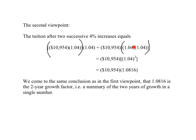We can compute whatever's in here first, and that is our growth factor. Whatever is the outcome of this computation inside these parentheses, that'll just be one big number that multiplies the 10,954. In other words, that is the growth factor. So we come to the same conclusion as in the first viewpoint, that 1.0816 is the two-year growth factor. This one number summarizes two years of growth.